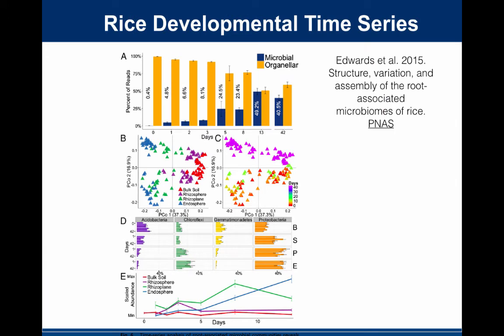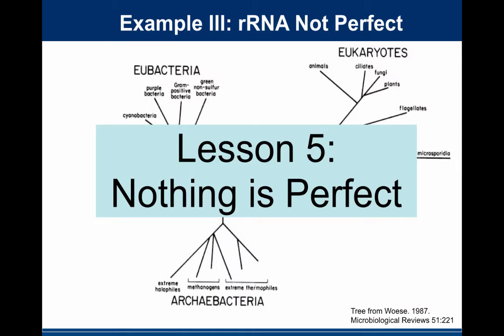Any analysis you do isn't going to be perfect. There are many reasons why ribosomal RNA-based analyses of communities are not the only perfect thing you should do. One that phylogeny can also help you tease apart is that the copy number of ribosomal RNA genes varies between taxa. If you try to use sequence counts to estimate relative abundance, that's biased by differences in gene copy number between the different cells in your environmental sample.